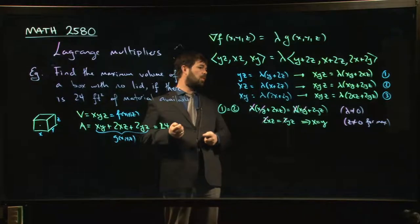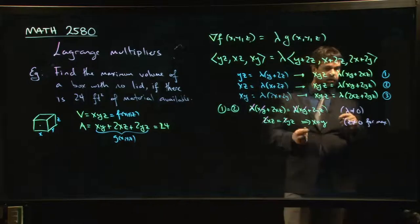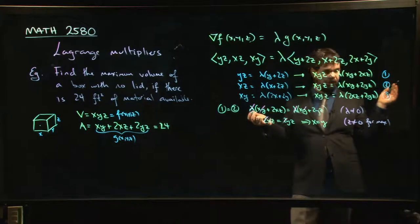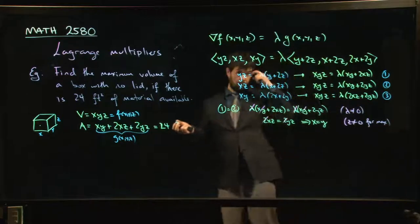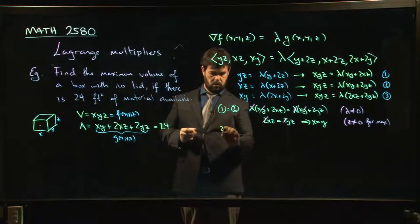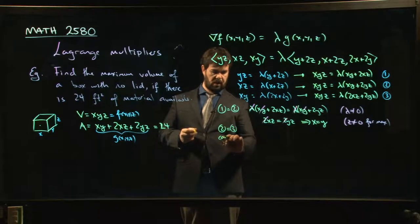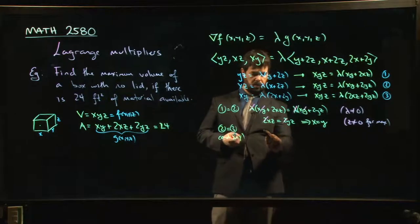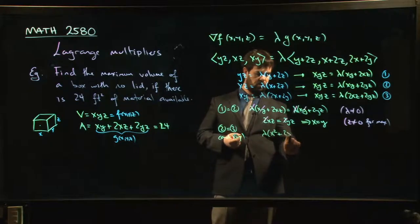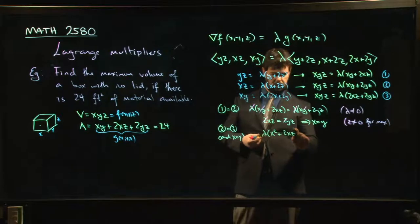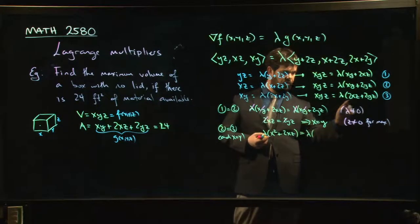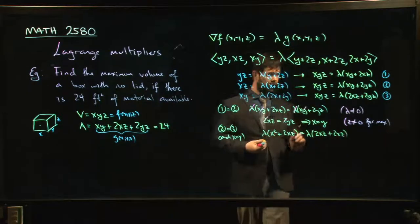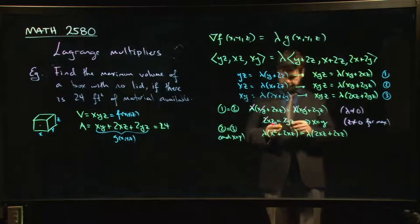All right. So where does that get me now? x equals y. Well, now it means that 1 and 2, right, these are now the same equations. So now I should kind of throw one of them away because they're the same. And let's compare, let's say, 2 equals 3. Let's see what happens if I set 2 equals 3. And of course, I also have now that x equals y. So let's just set y to x and see what we get. So from equation 2, we have lambda times x squared plus 2xz. And that's going to equal lambda times 2xz plus 2 more xz, right? Because I just said x equal to y.